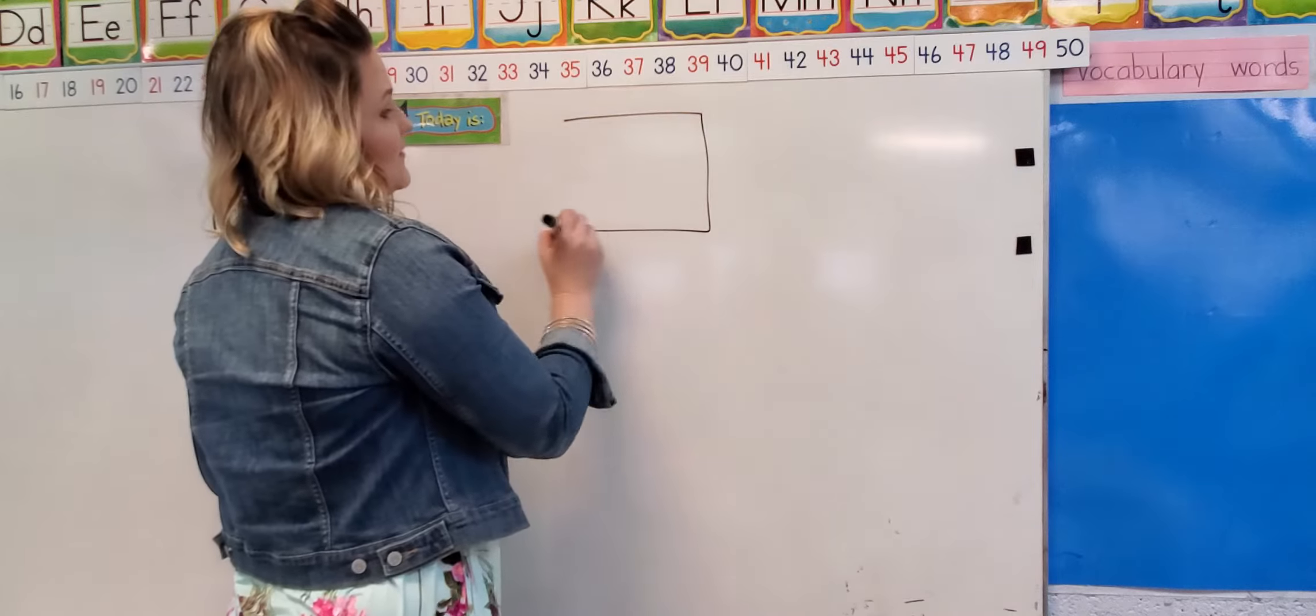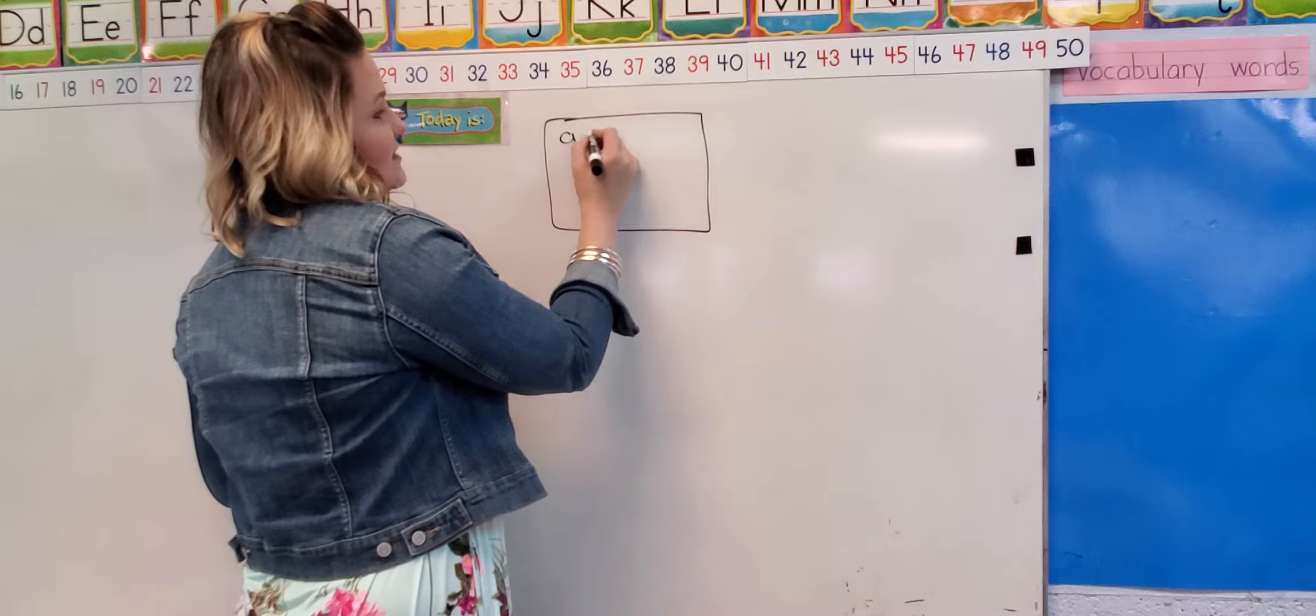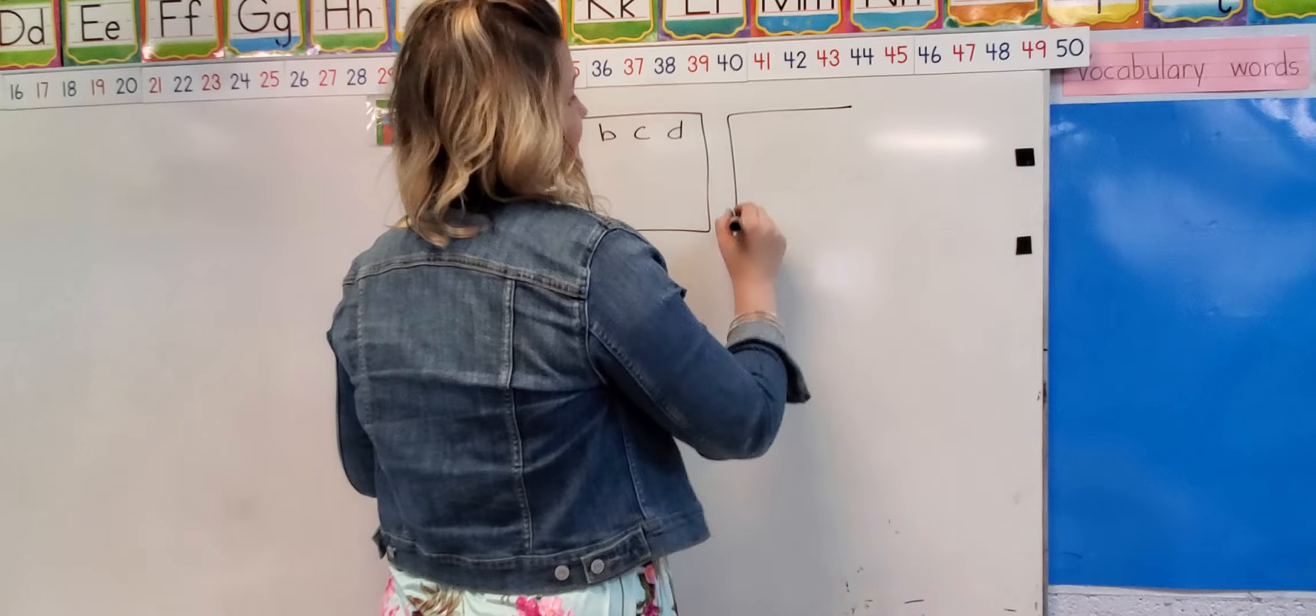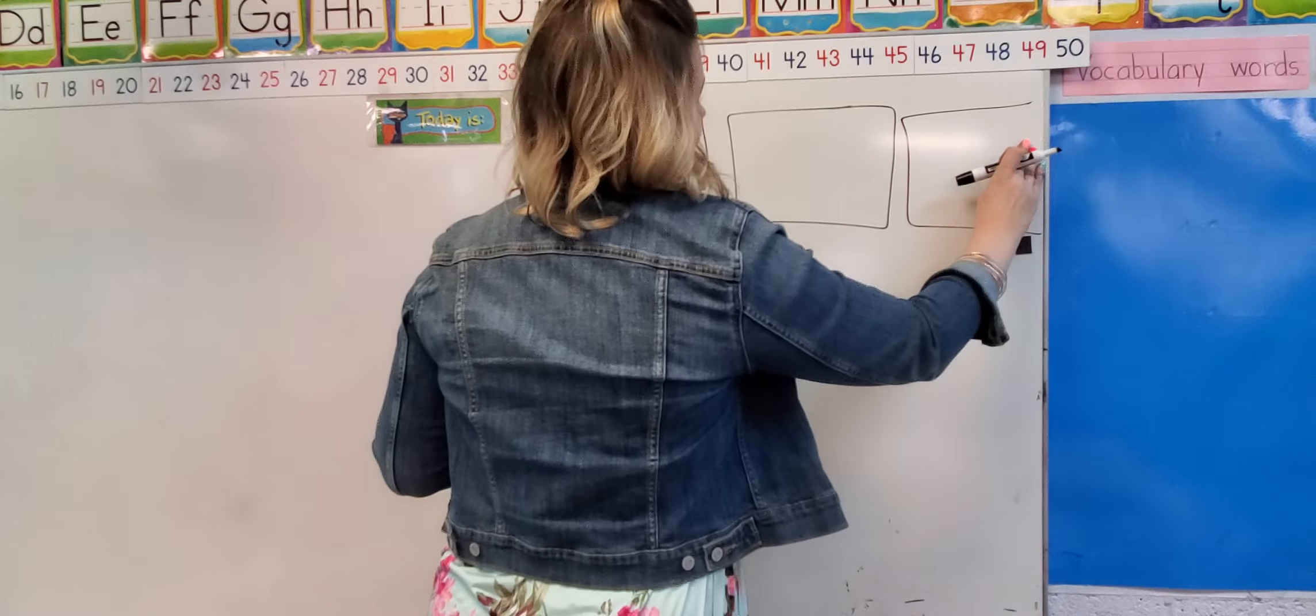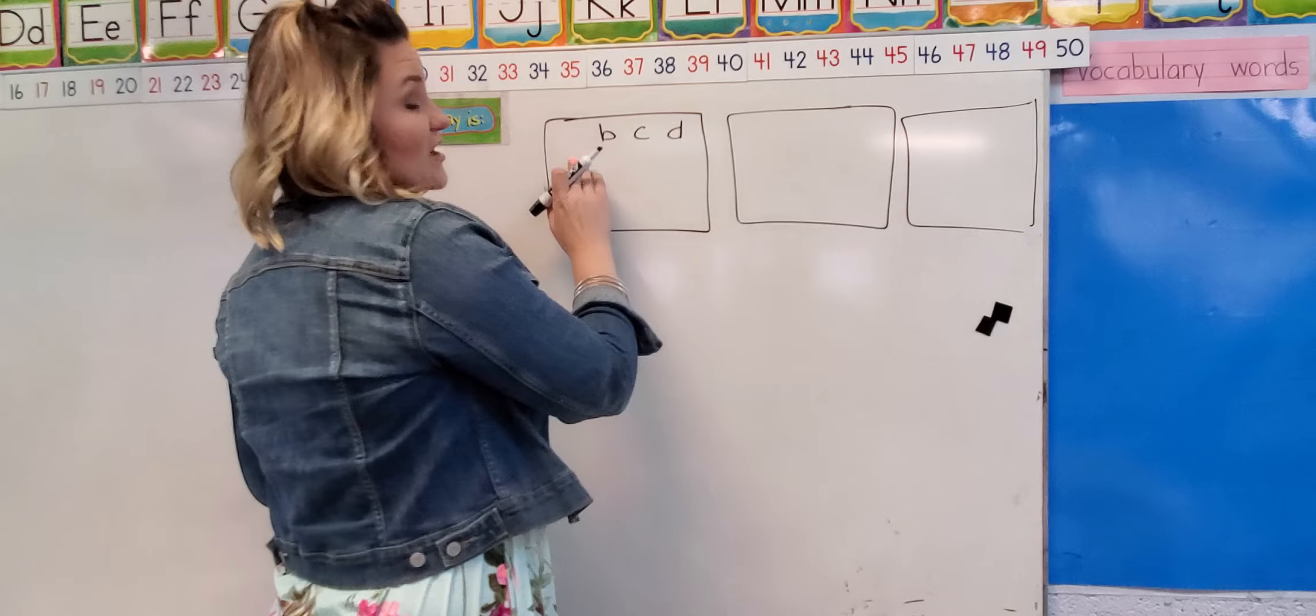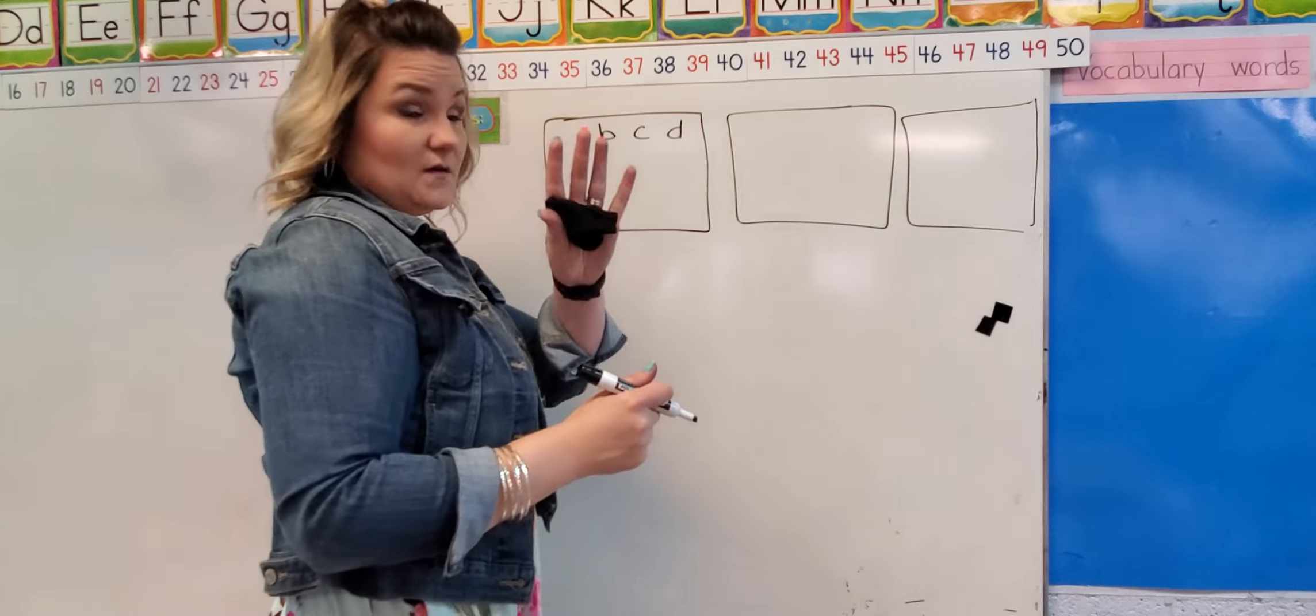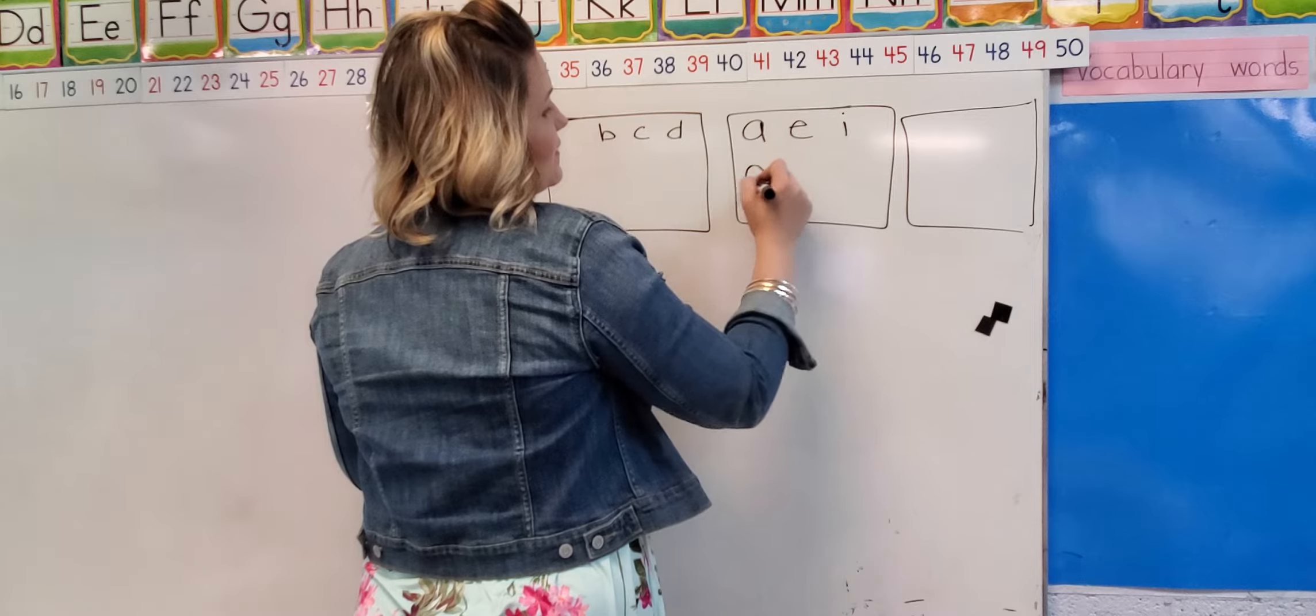So you'll have a sheet of paper and you can have letters on them. I'm out of room. You're going to put your consonants over here, and you have some vowels. What are my vowels? A, E, I, O, U. Okay, so I'm going to put A, E, I, O, U.